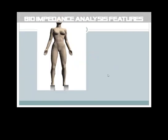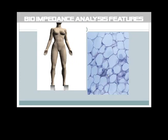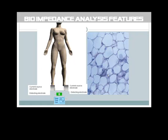BIA analysis: following the sending of weak intensity current at a model frequency of 50 kHz through active tactile electrodes, the BIA sensors measure the resistance and the reactance between two other passive tactile electrodes. This tetrapolar mode measurement provides estimated body composition parameters.